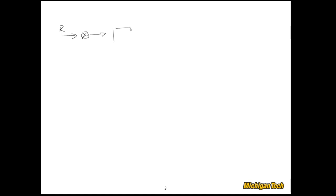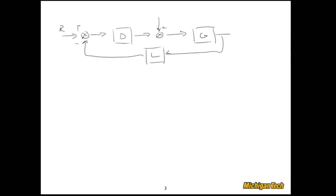Let's go back to this block diagram. These are all transfer functions. The transfer function between Y and R is pretty straightforward — we set W equal to 0 and then write Y over R as DG over 1 plus DGL.